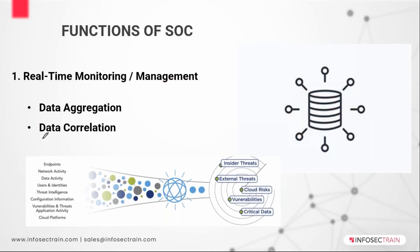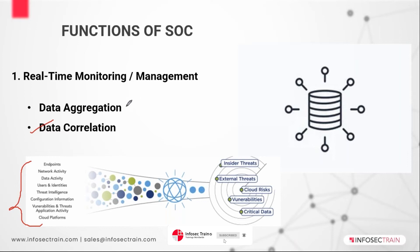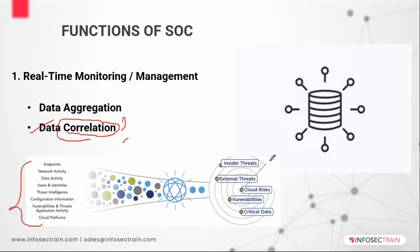So that's what we call aggregation — all of the data is collected to one source. Once we have collected it, before going to the analysis part, we need correlation to be done. So what is correlation? Let's understand that.